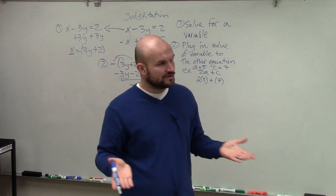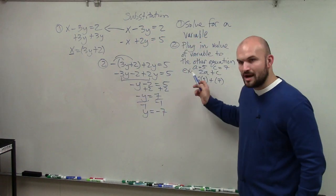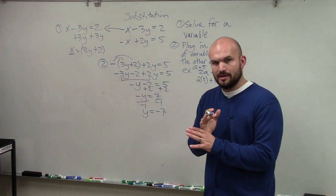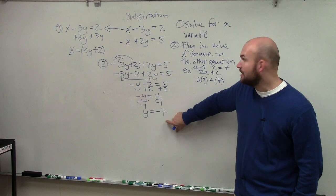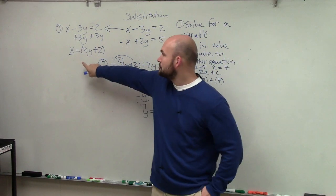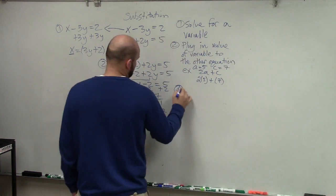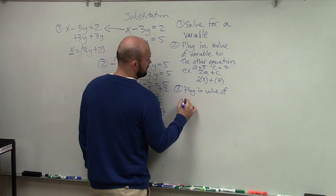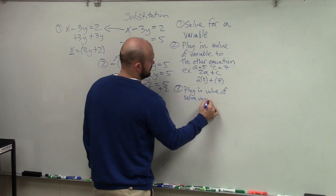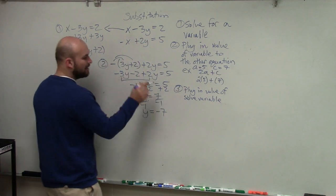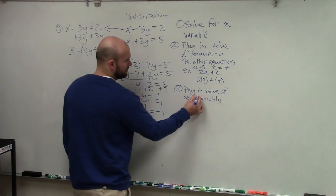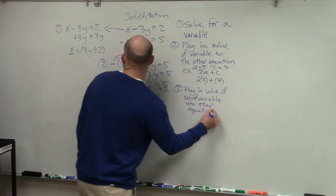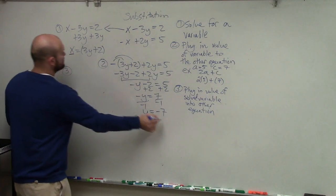Remember, guys, when we were graphing these, they had intersection points, right? They crossed at a coordinate point. So these two graphs cross when y equals negative 7. But remember, a coordinate point has an x and a y value, right? So we need to figure out what x is. So now I take the value of y and I'm going to plug it back in to my equation. Now I'm going to plug in the value of my solved variable into the other equation.